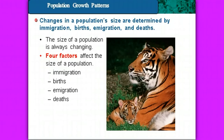The size of a population is ever-changing because of these four factors. Immigration is when organisms move into a population. Births add new offspring to the population size. Emigration is where organisms leave the population and move to a new area. Deaths subtract from the population size.